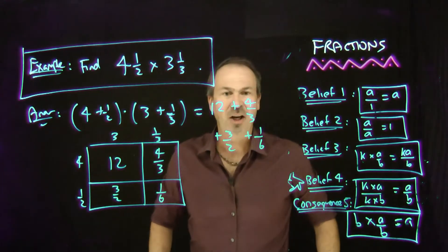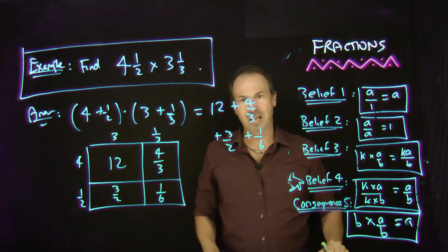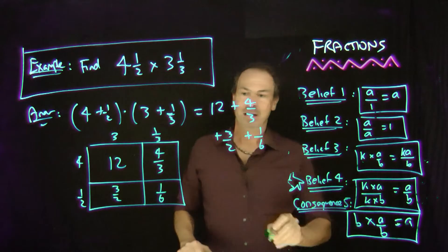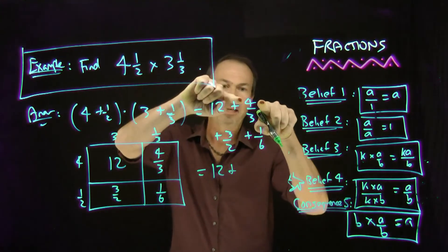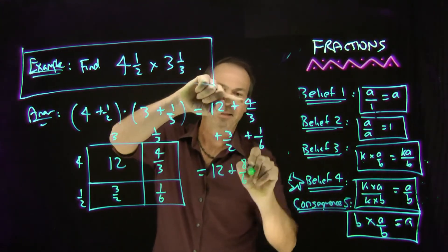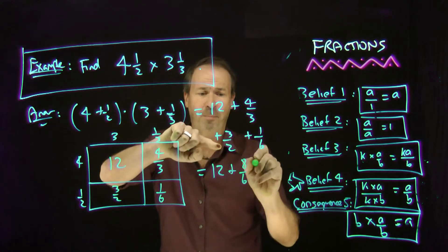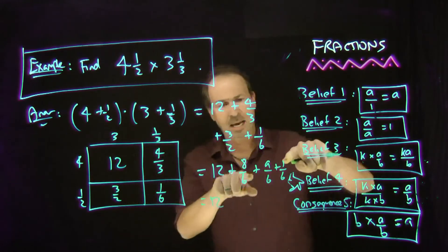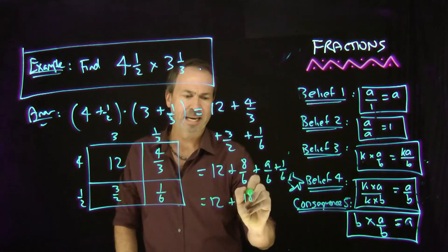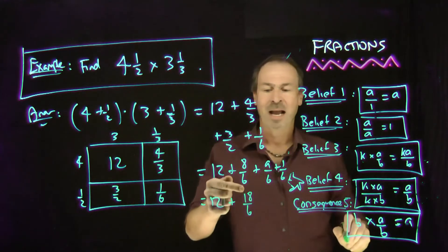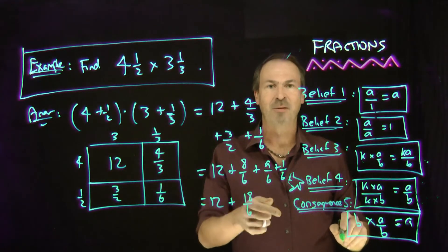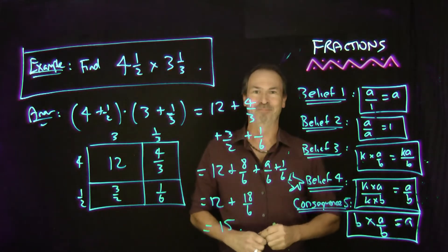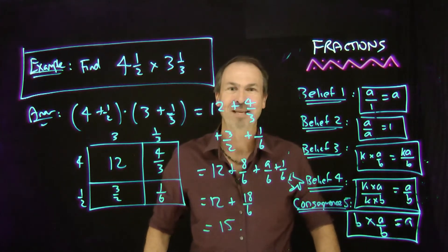So actually the true answer is 12 plus 4 thirds plus 3 halves plus 1 sixth. Alright, so now I have to actually do all that out. It looks like if I make everything in terms of sixths, life could be good. So let me do that. This is 12. To make this into sixths, I'm going to do doubling 8 sixths. To make this into terms of sixths, I'll do tripling plus 9 sixths. And I've already got the 1 sixth. So I've got 12 and 18 sixths. 12 plus 18 sixths. That's really 6 times 3. I see that's really just 3. The answer is 15. It should turn out to be a nice whole number. Wouldn't expect that, but there it is. Nice whole number 15.